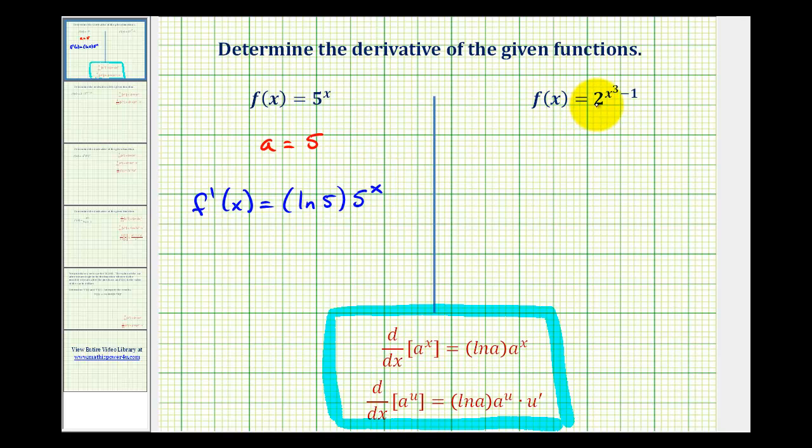On our second example, notice the base is 2 so that means a is equal to 2. Our exponent is a function of x. We have a composite function so we'll have to apply the chain rule where the inner function or u is equal to x to the third minus 1.